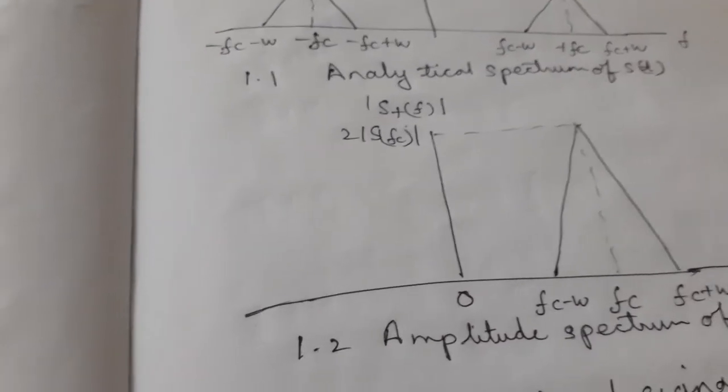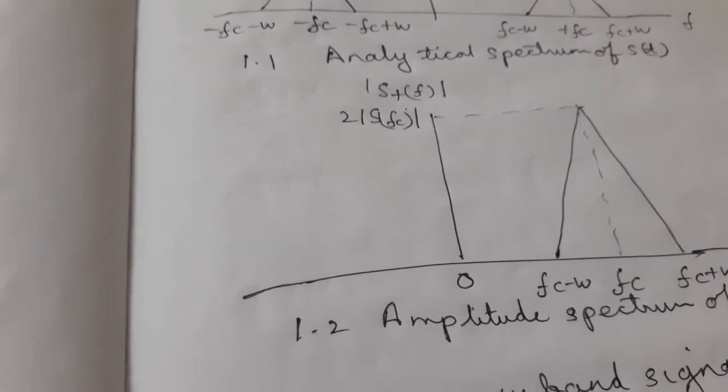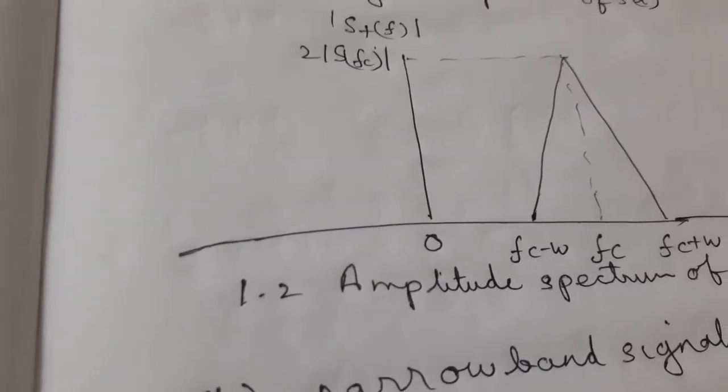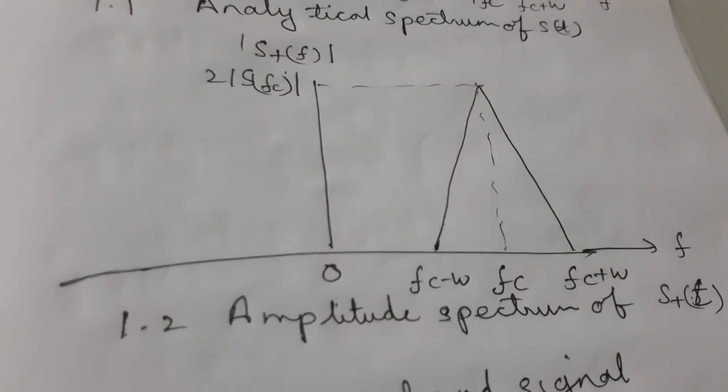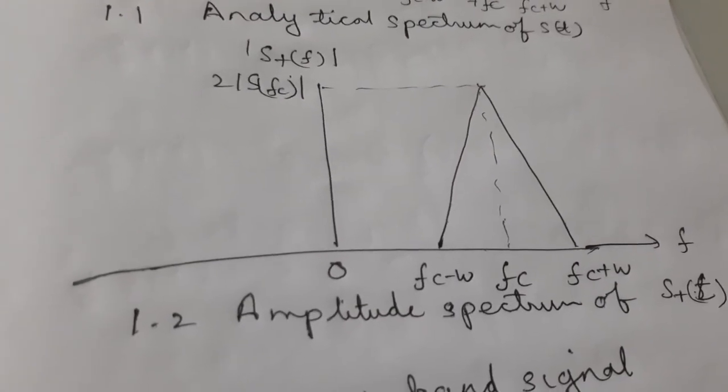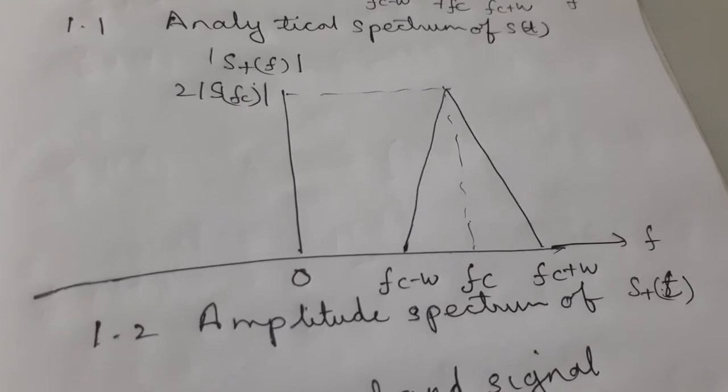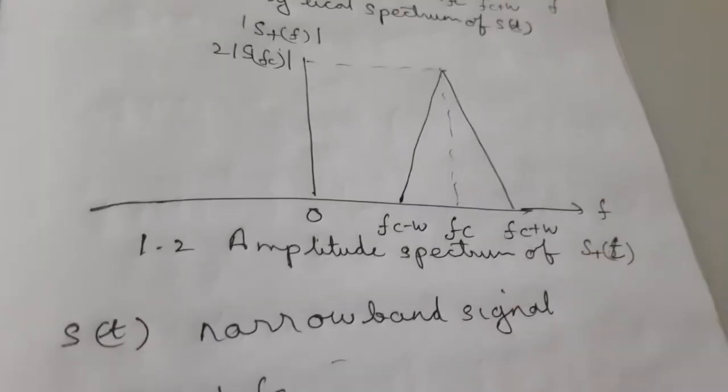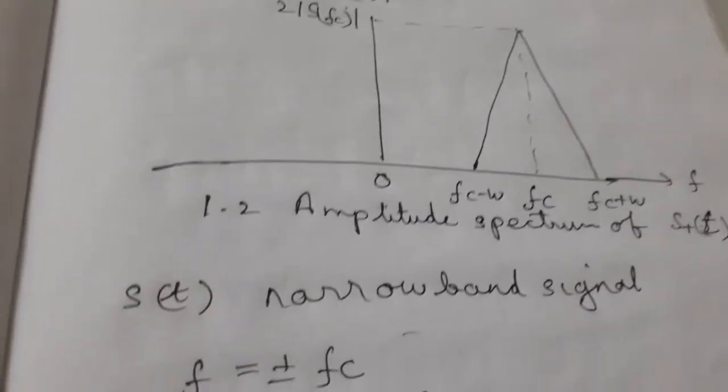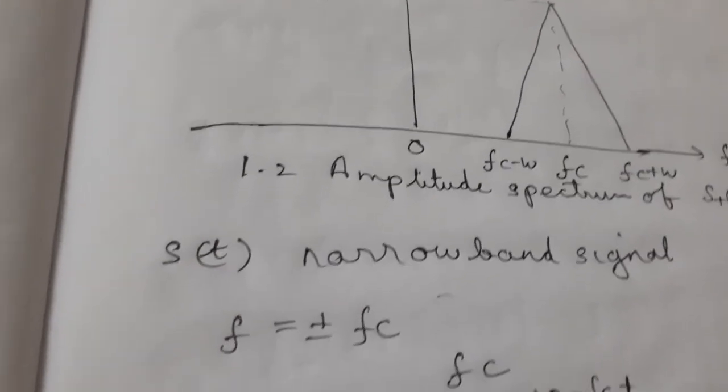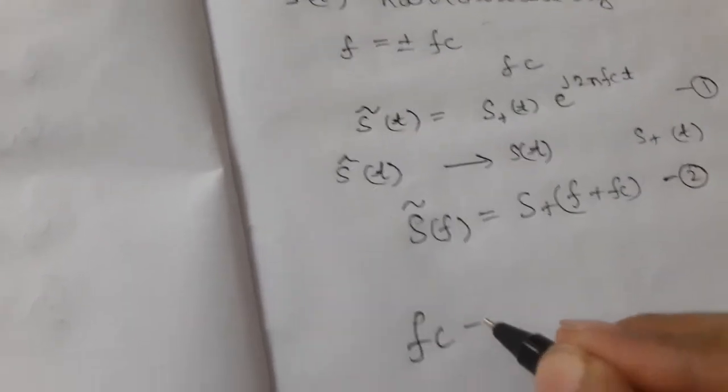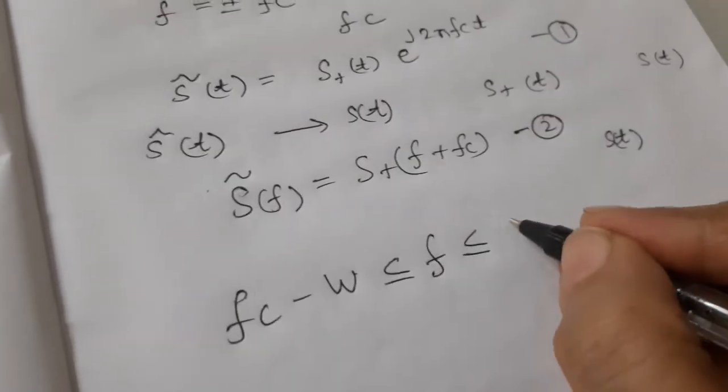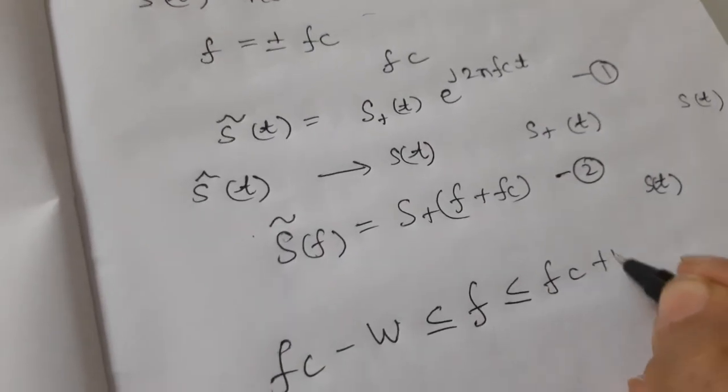The amplitude spectrum of the pre-envelope of S of t for positive frequency is shown in figure 1.2. The spectrum of pre-envelope S plus of t is limited to the positive frequencies. You can see only positive frequencies are there. So, you can write the frequencies: fc minus w less than equal to f less than equal to fc plus w.